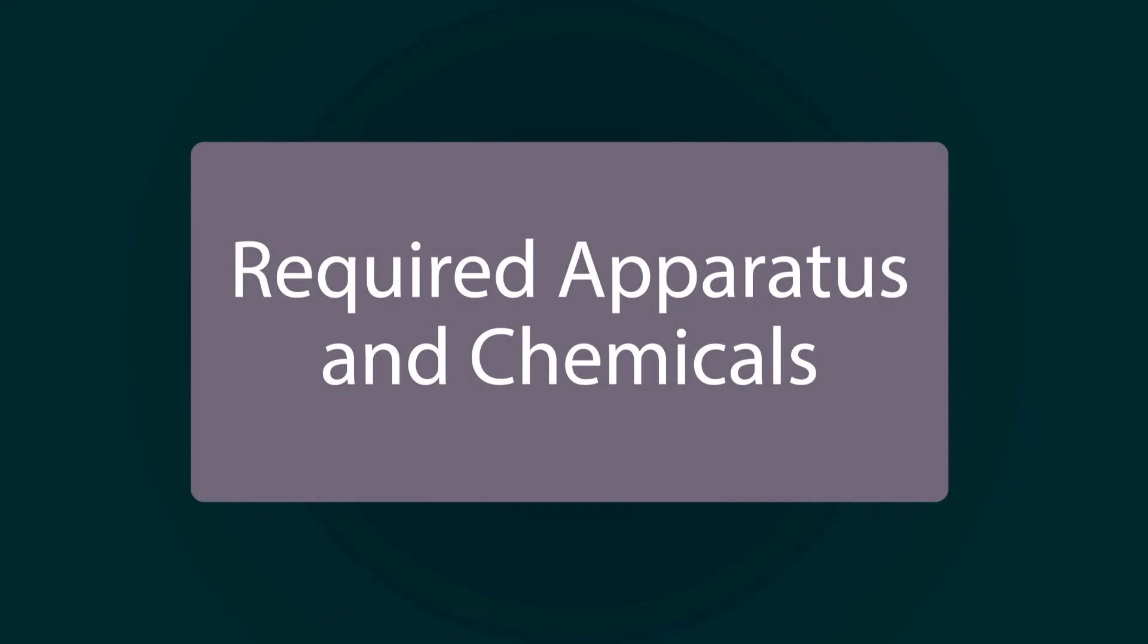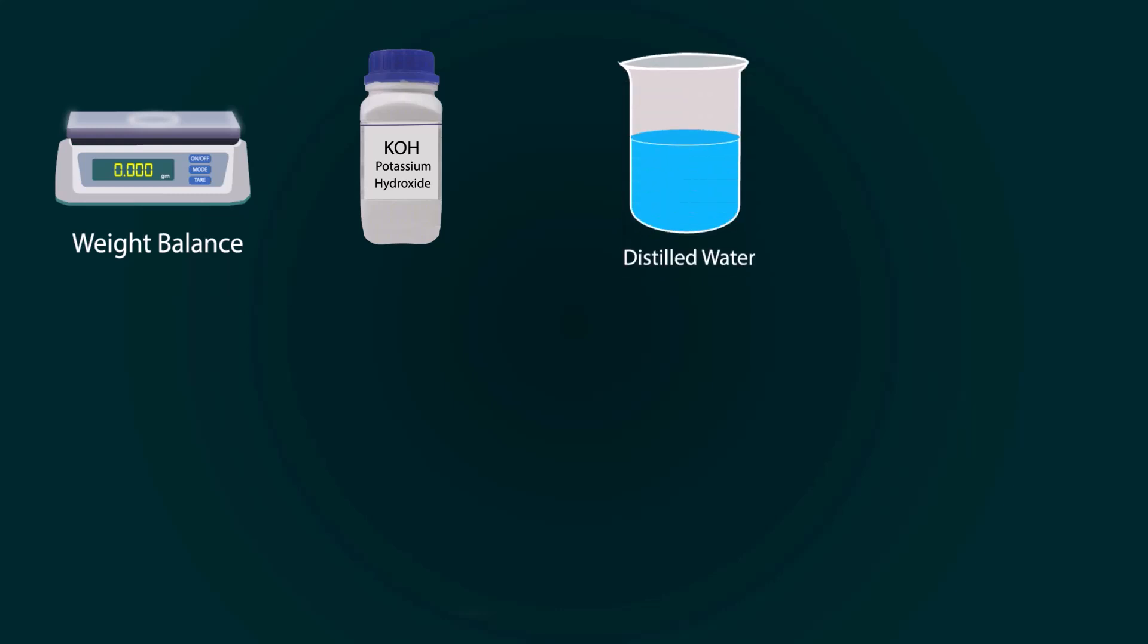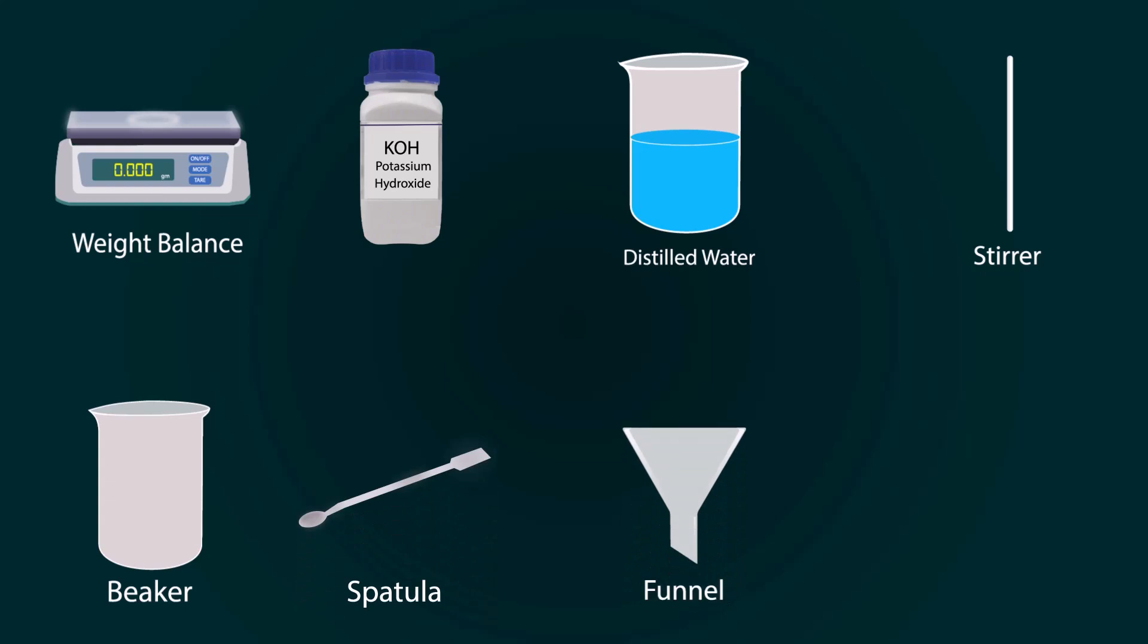Required apparatus and chemicals are: a weight balance, potassium hydroxide, distilled water in a beaker, stirrer, empty beaker, spatula, funnel, and a volumetric flask of thousand milliliters.